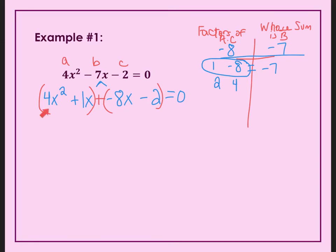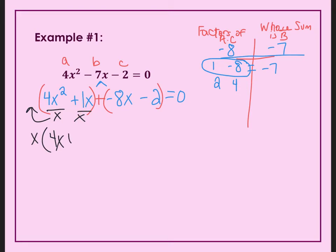Next is to look in each set of parentheses and see what the GCF is. We're going to look for the greatest common factor in each parenthesis. In this first one, my greatest common factor is going to be x — there's no number that goes into both, but I can factor out an x from both. So I'm going to put the x in front. 4x squared divided by x becomes 4x, and then 1x divided by x becomes plus 1.